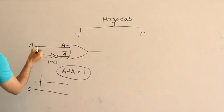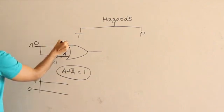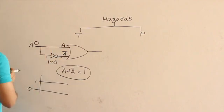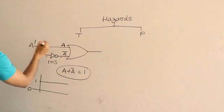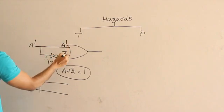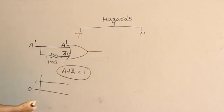Initially the value of A is 1 and therefore this one is 0 and so output will be 1.